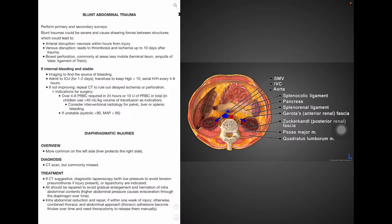If the patient is internally bleeding but stable, perform imaging to find the source and admit the patient to the ICU for 1 to 2 days. Then we will need to transfuse to keep hemoglobin greater than 10 and run a serial hemoglobin hematocrit determination every 4 to 6 hours. This is just to look for and monitor bleeding from an organ or fracture complex, such as a spleen laceration. No improvement calls for a repeat CT to rule out delayed ischemia or perforation. And for all pelvic, liver, and splenic bleeding, we need to consult and consider interventional radiology.